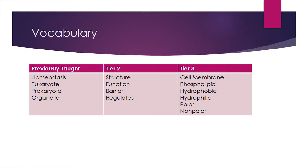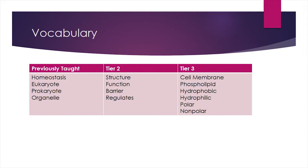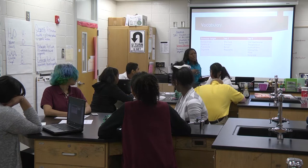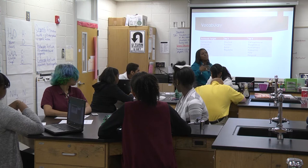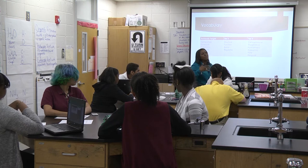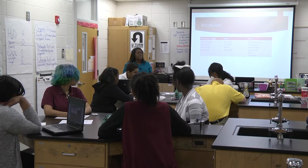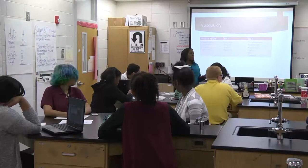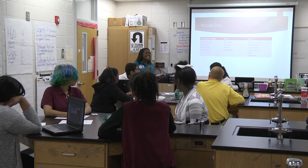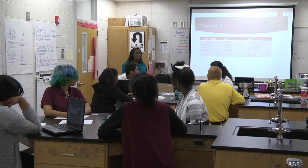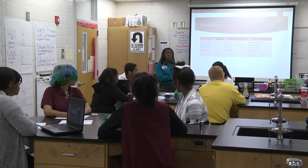Vocabulary: previously taught vocabulary includes homeostasis, eukaryote, prokaryote, and organelles — and we've talked about structure and function. Two new words you'll see today are 'barrier' and 'regulate.' Barrier means stopping things from crossing — like a trade barrier in social studies. Here it means stopping certain molecules from crossing the membrane. Regulate means it controls what can cross — it's choosy, it's picky. Tier three vocabulary specific to this lesson includes: cell membrane, phospholipid, hydrophobic, hydrophilic, polar, and nonpolar — probably brand new to you, so we'll spend a lot of time on them.